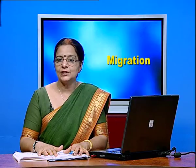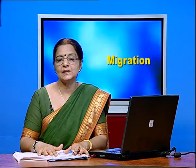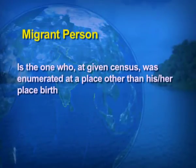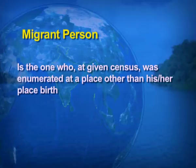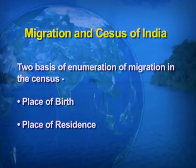When we talk about migration, the person who migrates is known as a migrant person. How do we define the term migrant person? It is one who at a given census was enumerated at a place other than his or her place of birth. Now, migration and the census of India — there are two bases of enumerating migration: one is the place of birth, and second is the place of residence.